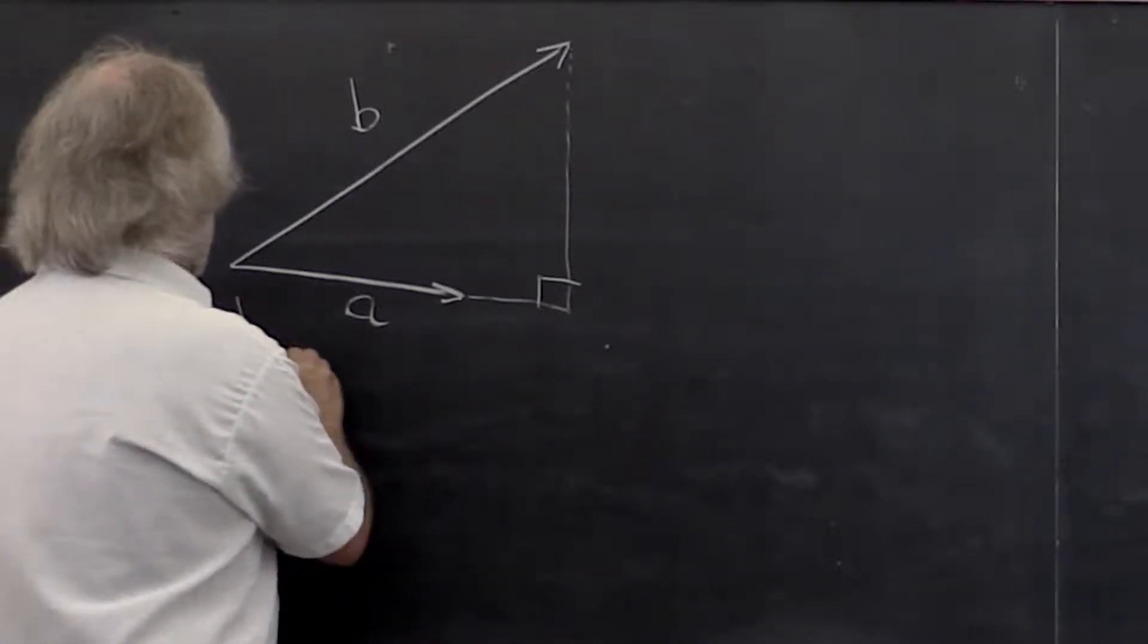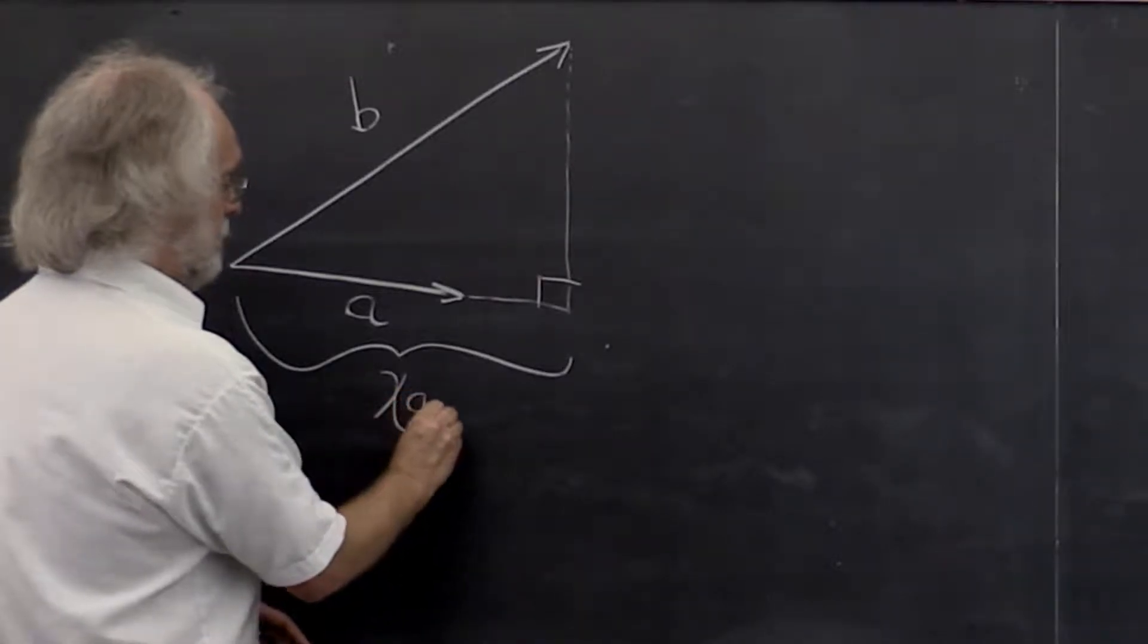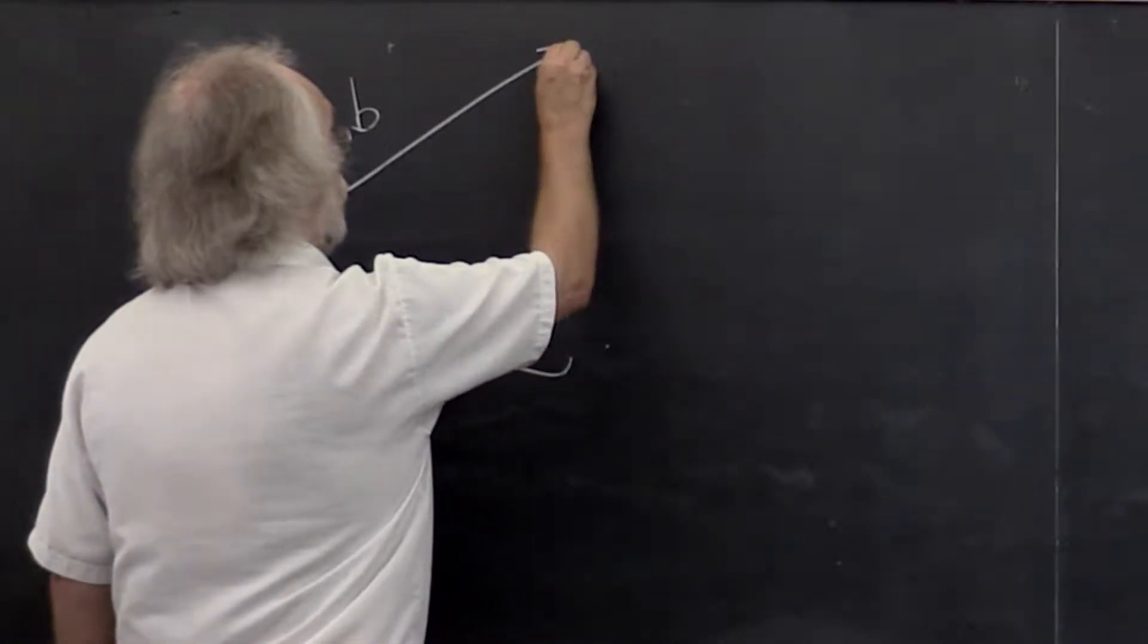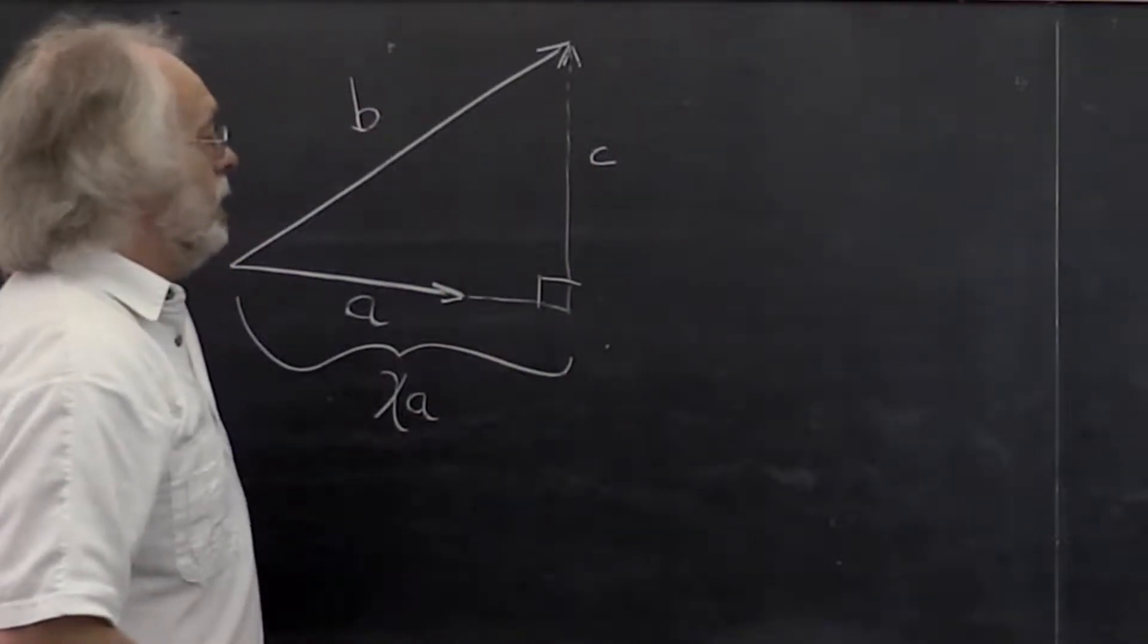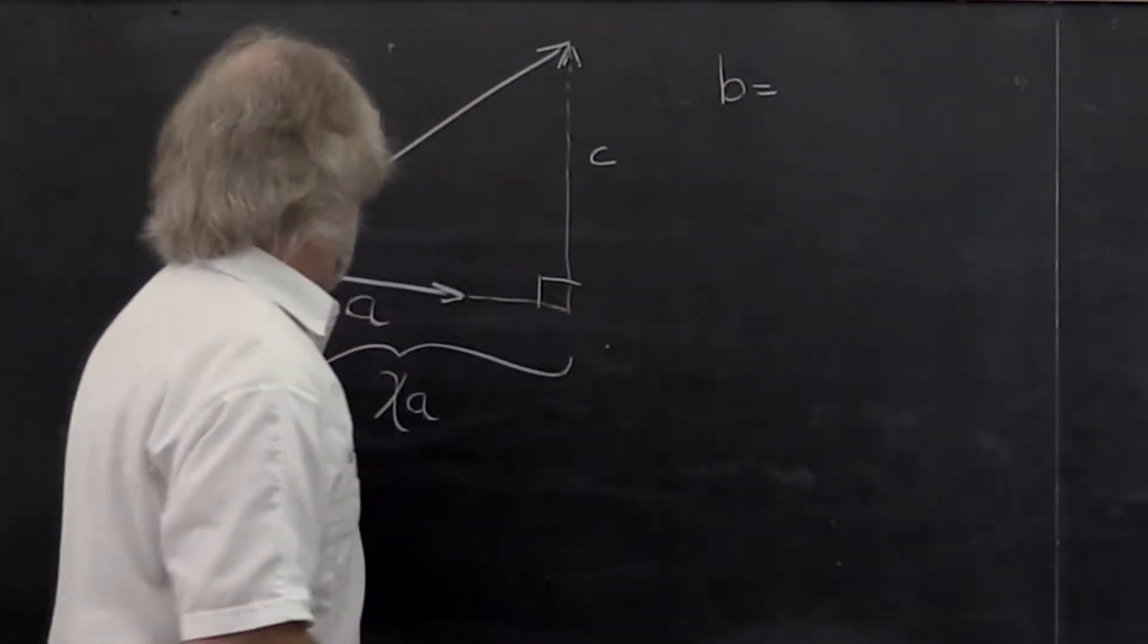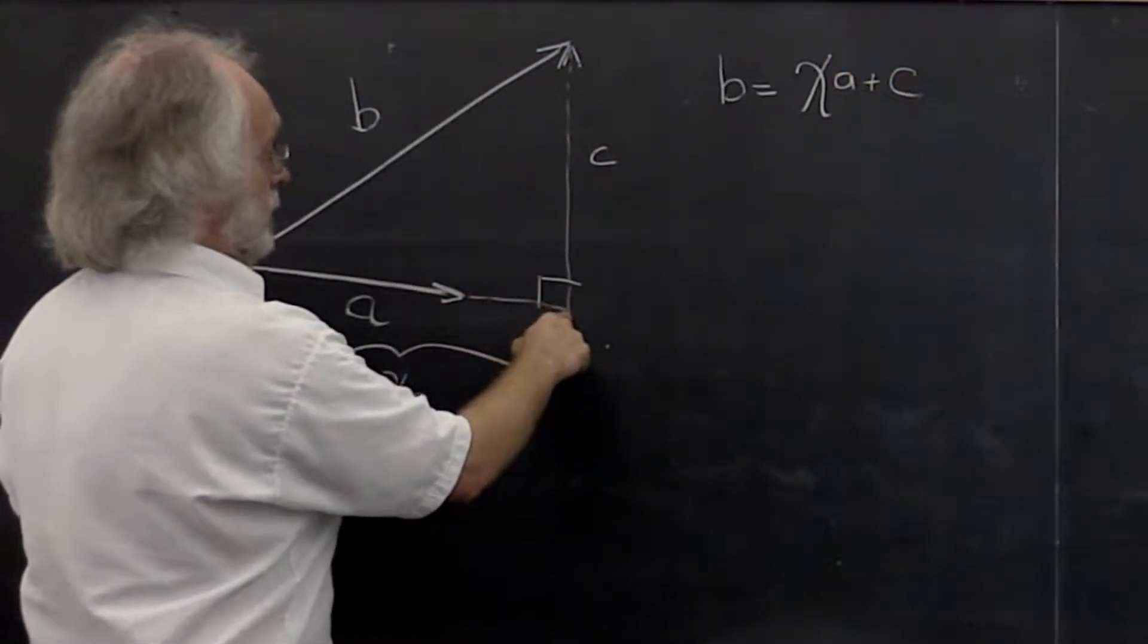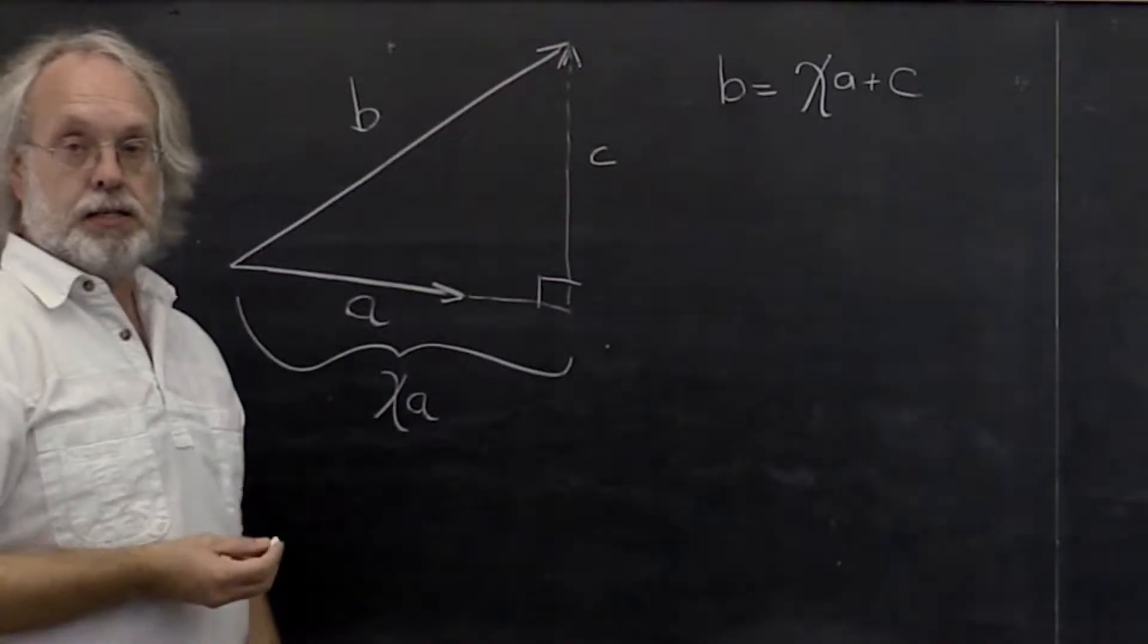What we can do is say, we don't know what it is, but let's say that this is chi times the vector A. Then what do we know? Well, if we call this vector here C, then we know that B is equal to chi times A plus C. Because if you go from here to here and then you go from here to here, the net result is that right there.